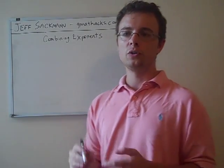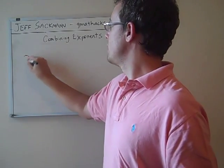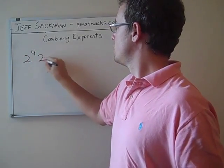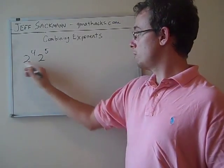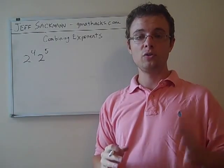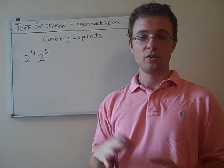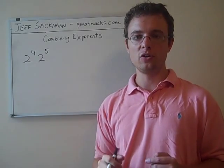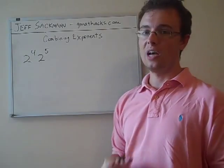The first ones are all going to assume that we have the same base. So let's say you're looking at something like 2 to the 4th times 2 to the 5th. When I say the same base, I'm referring to the 2. If we have 2 to the 4th times 3 to the 5th, then it gets more complicated. There's not a lot of exponent magic we can do to simplify things.